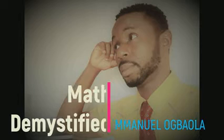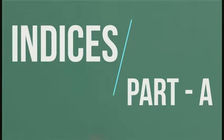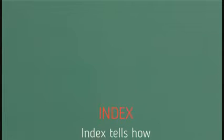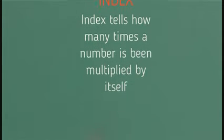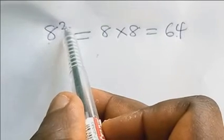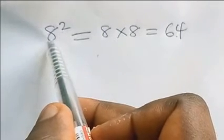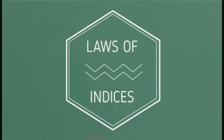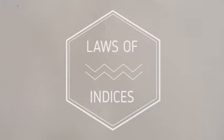Math demystified — hello everyone, you are welcome to my tutorial class. This is Part A of indices. Indices is the plural of index. Index is the same thing as power or exponential. Index tells how many times a number is being multiplied by itself. For example, 8 to the index 2 tells us that 8 is multiplying itself twice: 8 times 8, and the result is 64. Now let's go to the laws of indices — I'm going to do some variations to make it interesting.